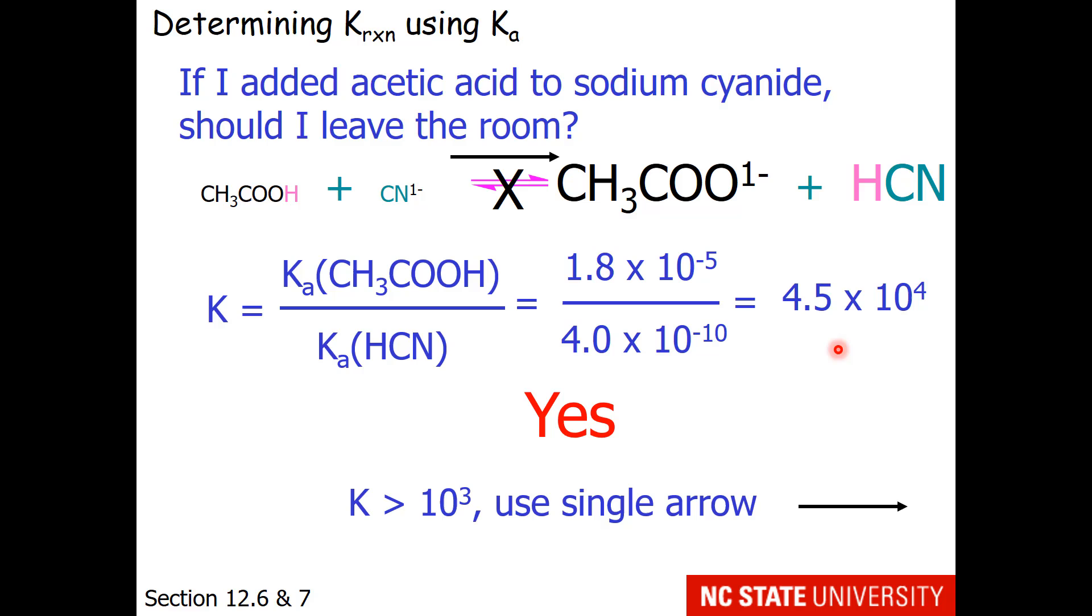We have a convention for acid base reactions. If the equilibrium constant is greater than 1000, typically we use a single arrow in the reaction. If the equilibrium constant is less than 1000, we should use double sided arrows to say a little bit each way. And it never comes out equal to 1000, as far as I have ever seen.